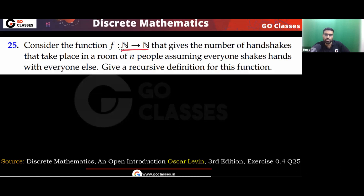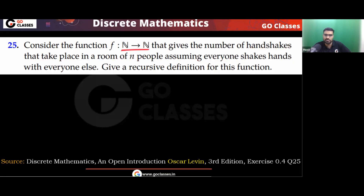Consider the function from N to N, from natural numbers to natural numbers. This function gives the number of handshakes that take place in a room of n people, assuming everyone shakes hands with everyone else.